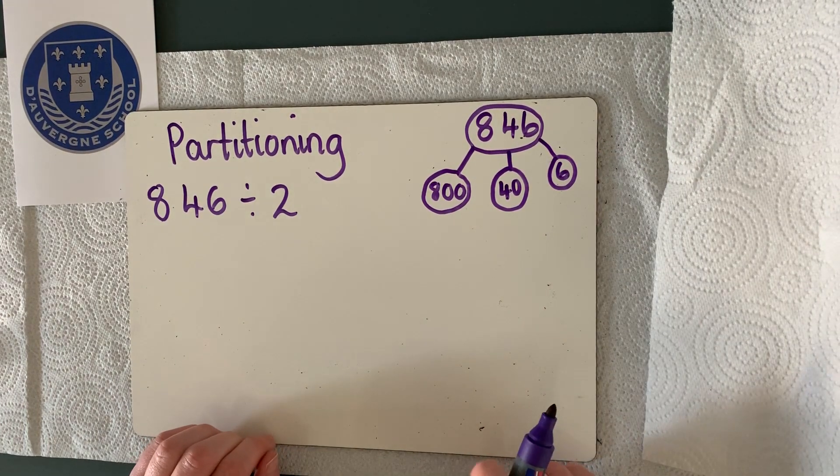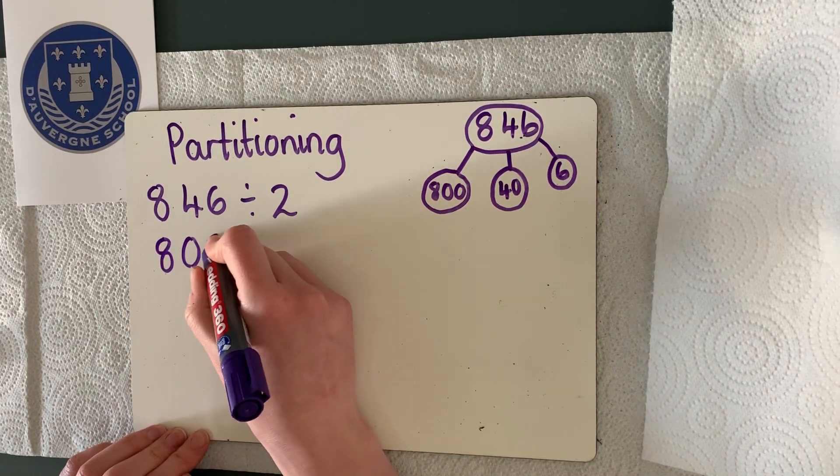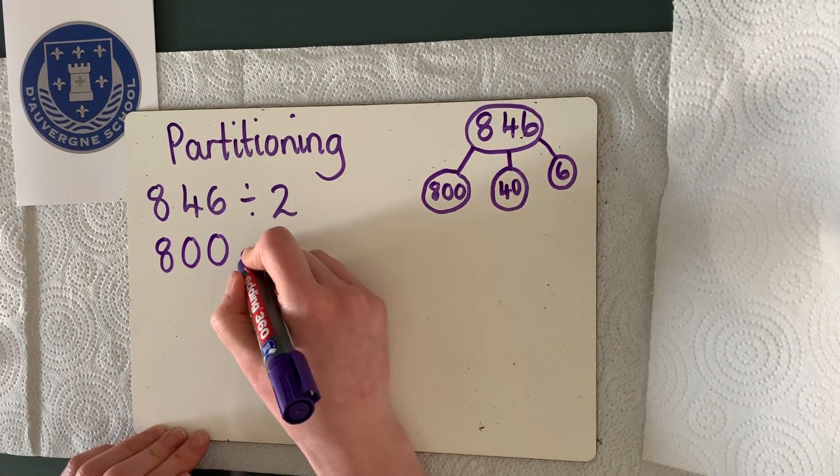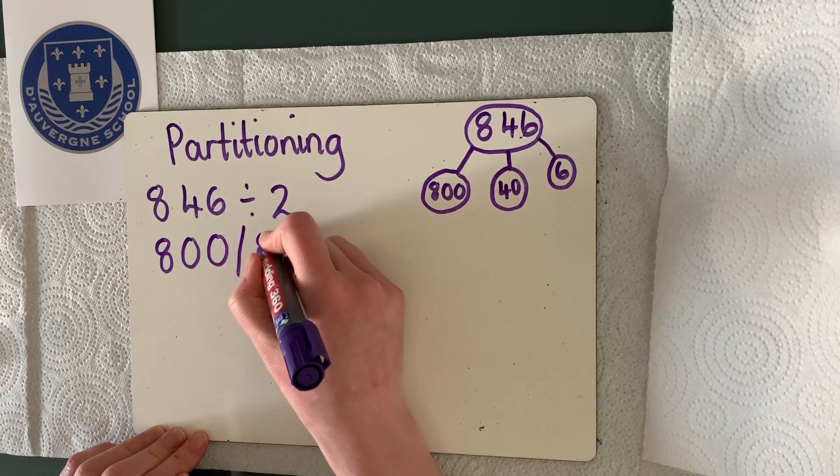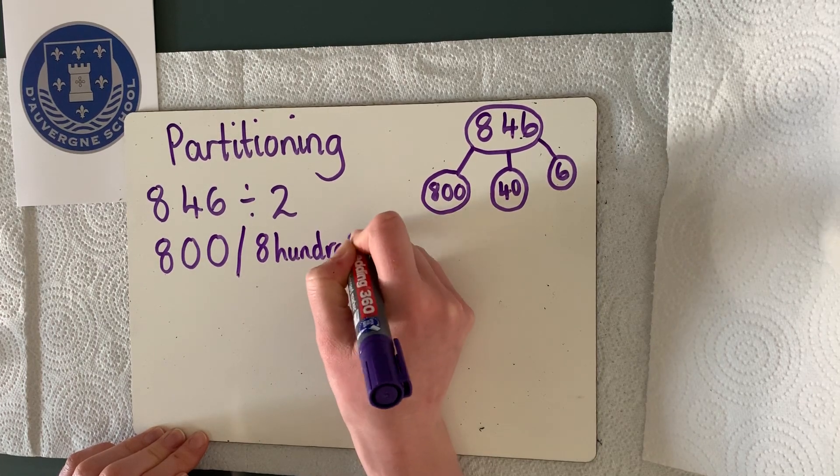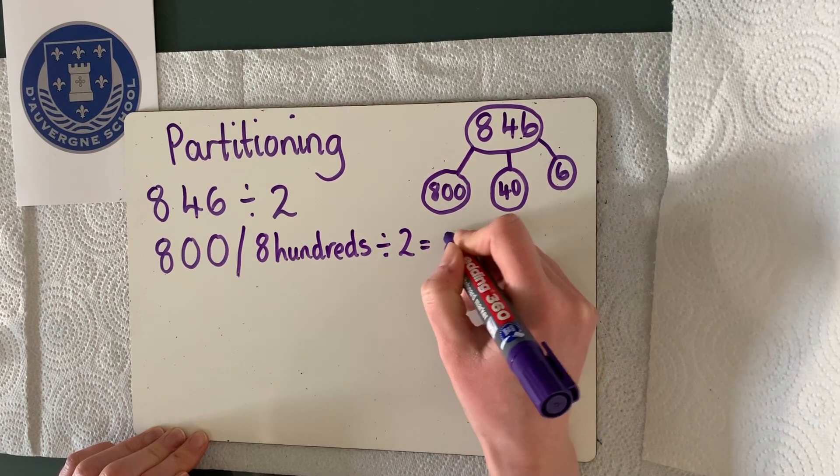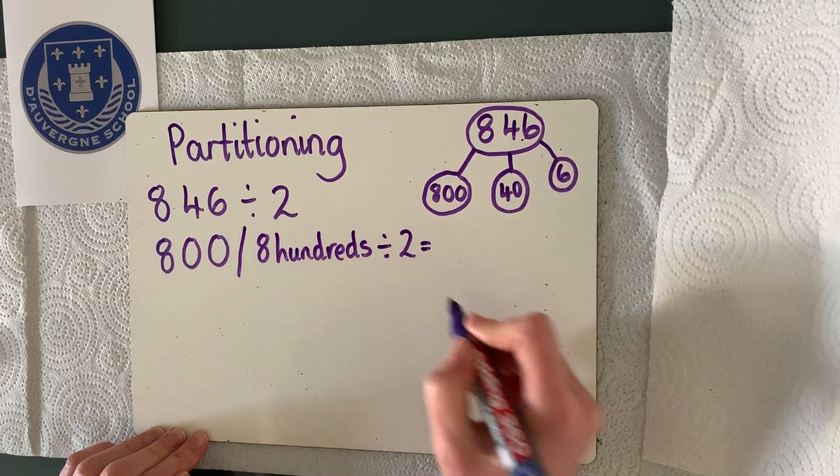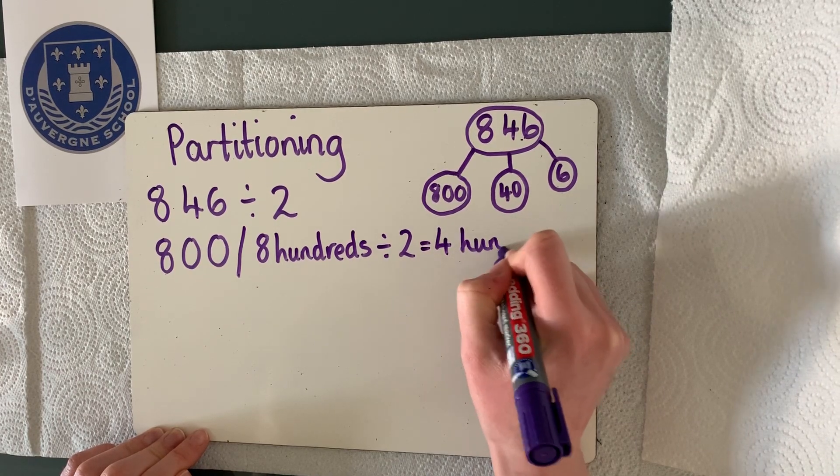Okay, so if we are breaking this down, we've got 8 hundreds, which we can write as 800, or we can write it as 8 hundreds using our words. So 8 hundreds divided by 2. Well, we know that 8 divided by 2 is 4. So that will give us 4 hundreds.